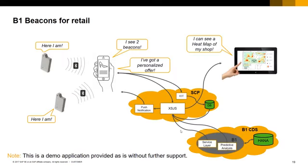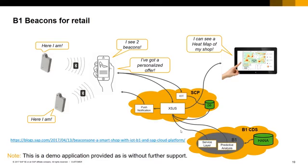B1 Beacons for Retail is a solution demonstrated at the SMB Innovation Summit 2017. This solution generates personalized offers to customers on their mobile phones. The offers are based on their location in the shop as well as their SAP Business One buying history. Beacons are used to detect customers' location. Customers can accept the offers and purchase the proposed items as well as other items in the shop without going to the cashier. The Service Layer is used to create the orders in SAP Business One for each specific customer. This solution was developed and implemented on the SAP Cloud Platform using SAP Cloud Services like Internet of Things, Push Notification, SAP HANA Access Engine, and SAP HANA Database. Please note that this is a demo solution provided as-is without further support. For more details, please check the URL provided here pointing to an SAP Community blog.